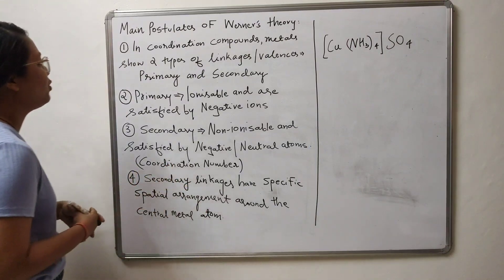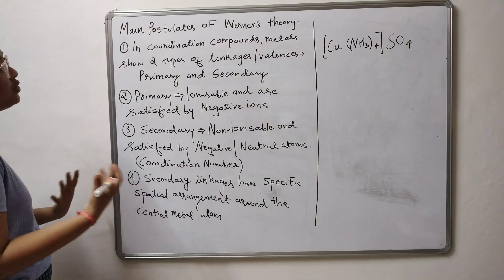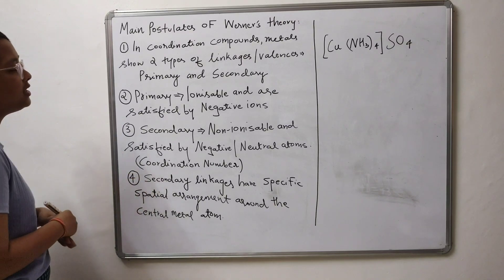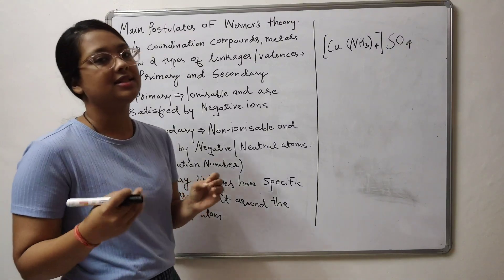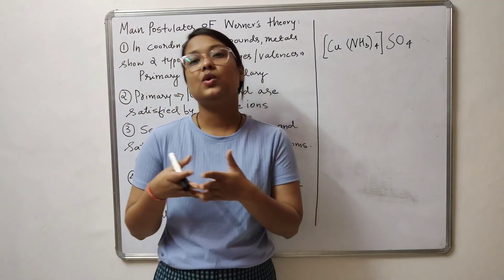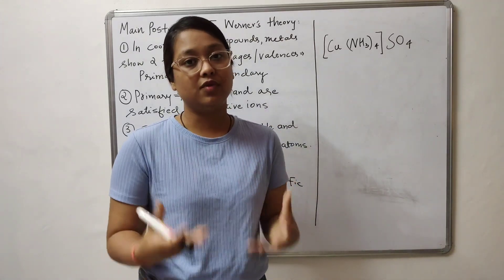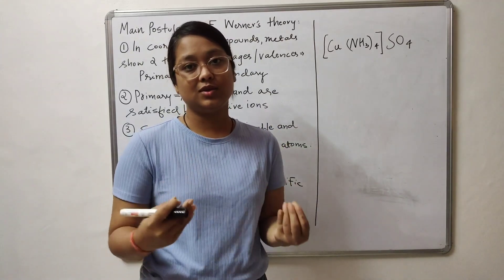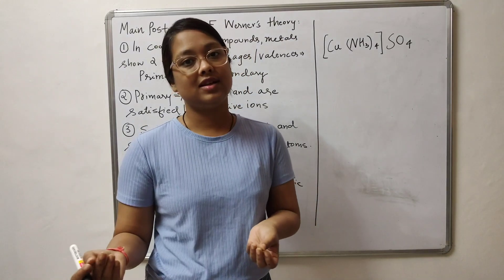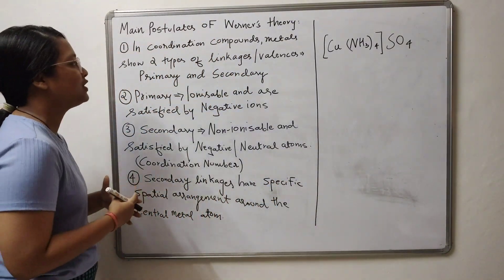Starting with the first point: in coordination compounds, metals show two types of linkages or valencies, which are primary and secondary valencies. Sir Werner was the very first chemist to put forward these two terms — primary valency and secondary valency — with respect to coordination compounds.